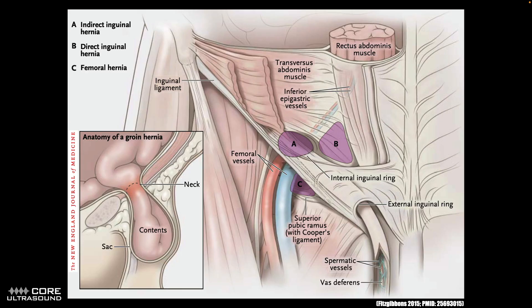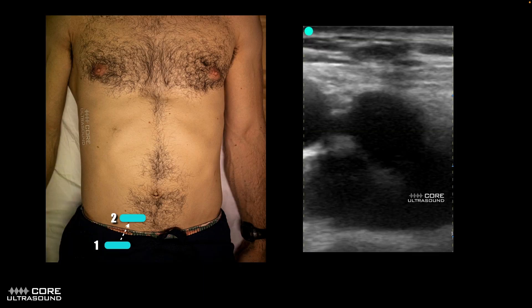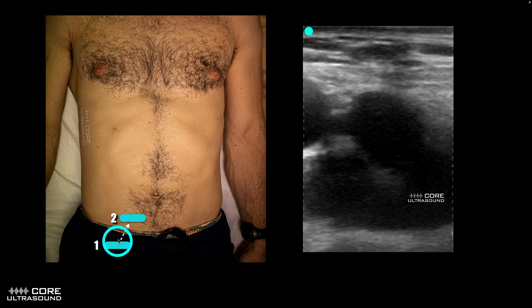With regards to direct versus indirect, we're not going to focus on that. We're just going to diagnose an inguinal hernia and a femoral hernia. The landmarks here are going to be your blood vessels — either the femoral vessels, the inferior epigastrics, and the inguinal ligament. To identify the areas in which hernias will be located, we're going to start off by looking at the femoral vein area, the same spot that we look for a DVT.